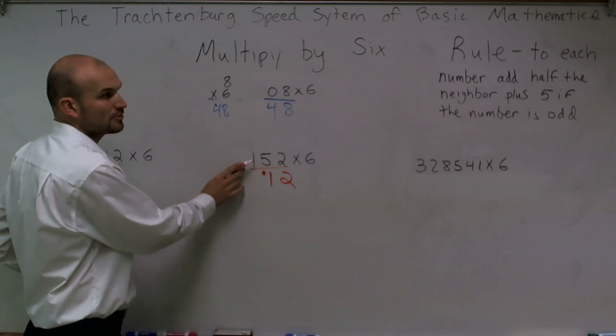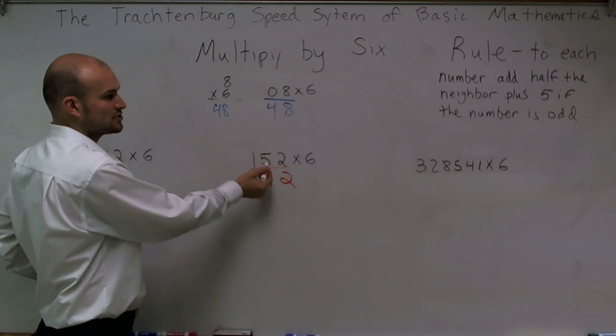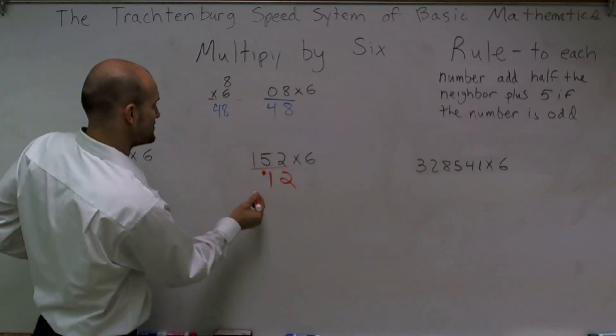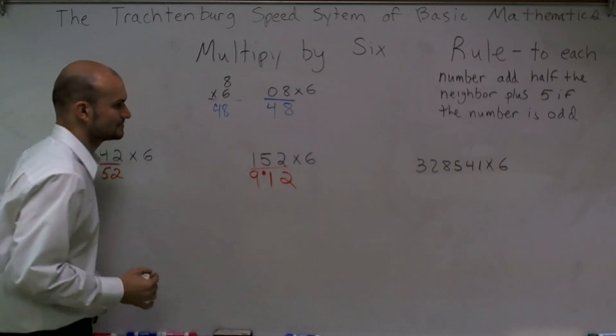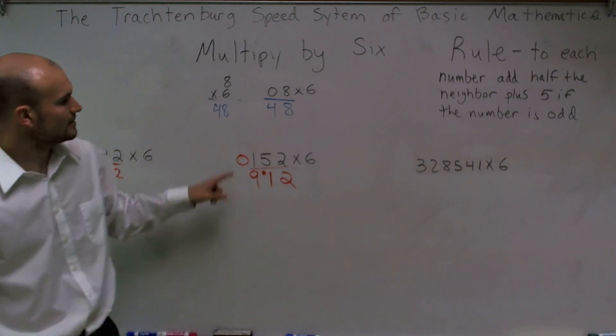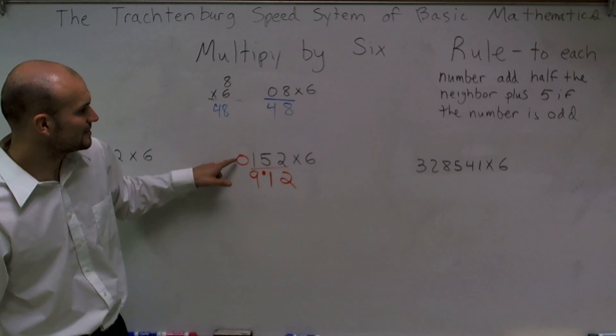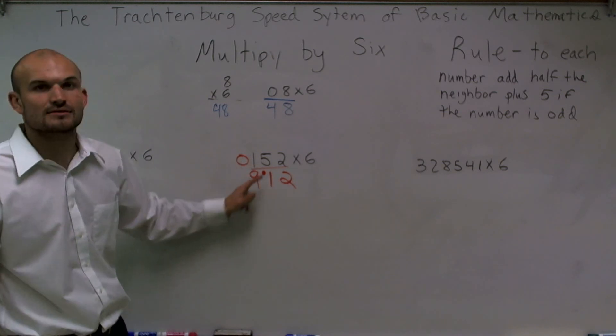One is odd, so I'm going to add five, which is six. Six plus half of five, which is two. Six plus two is eight. Plus my one is going to give me six plus two is eight, plus one is nine. So therefore, the final answer—oh, I've got to put a zero there, forgot about that. So I put a zero in front, remember, put that zero there. So zero plus half of one, which is zero again. So my final answer is 912.